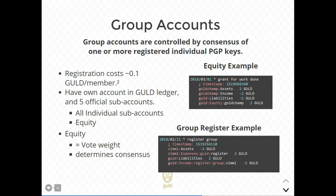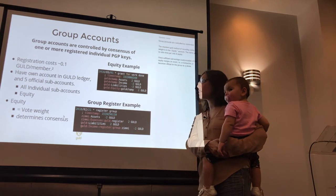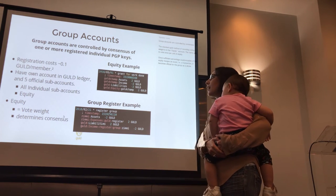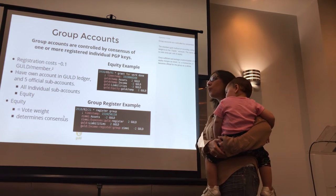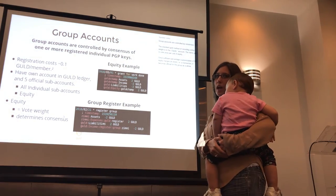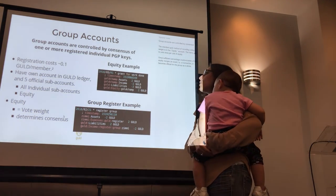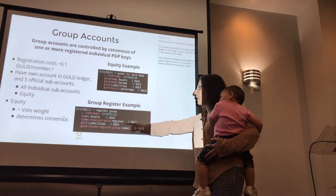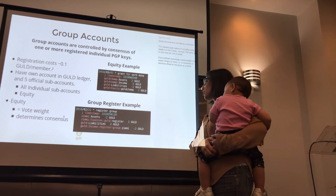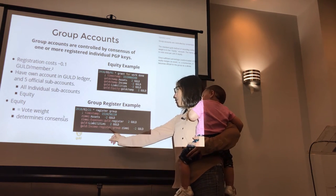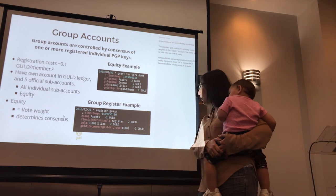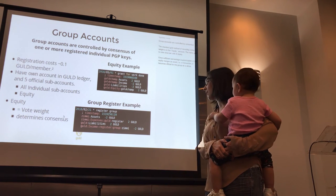Group accounts can be controlled by one or more CGP keys. They are customizable — you can have rules written into how many people would need to vote to create any kind of transaction, or you can have one signature per transaction or all of them per transaction. It's up to the group to define those rules. Here you see how the group is registering, which is also a transaction — in this case, registering with two gold, debiting the transactions and crediting the expenses and liabilities.